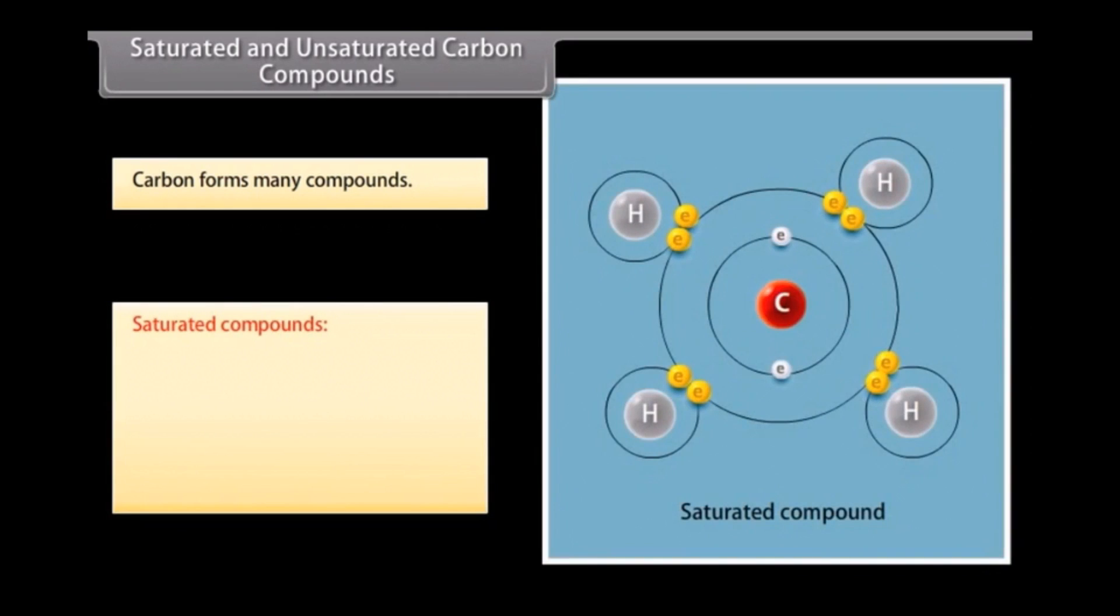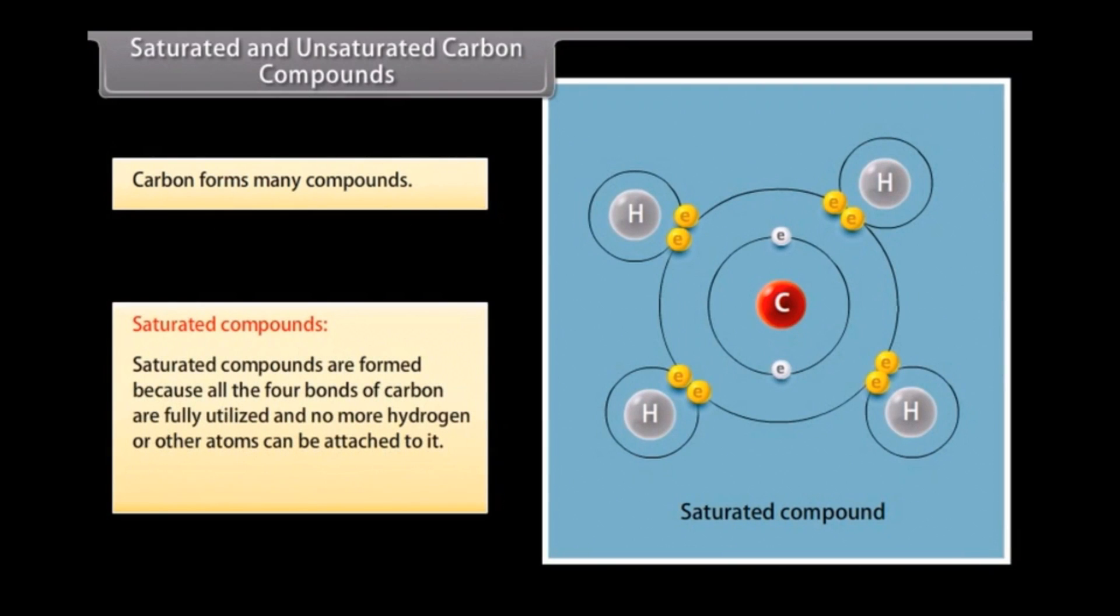Saturated compounds. The carbon and hydrogen compounds where the adjacent carbon atoms contain only one single covalent bond are known as saturated hydrocarbons. The reason for the formation of saturated hydrocarbons is because all four bonds of carbon are fully utilized and no more hydrogen or other atoms can be attached to it. These are known as alkanes.